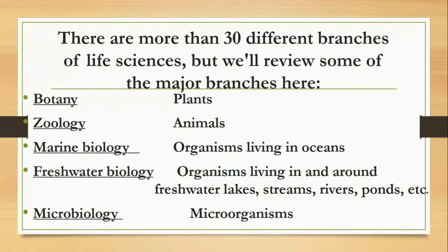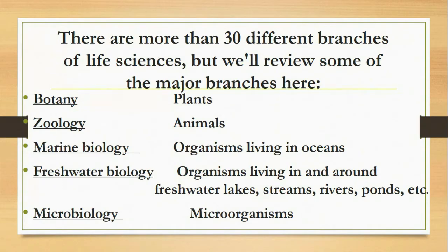There are more than 30 different branches of life sciences, but we will review some of the major branches here. The life sciences are the study of living organisms, dealing with every aspect — from the biology of cells, to individual organisms, to how these organisms interact with other organisms and their environment. The life sciences are so complex that most scientists focus on just one or two subspecialties.